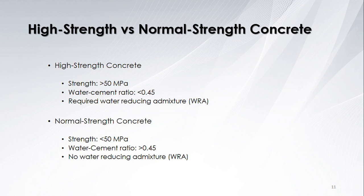For high-strength concrete, the compressive strength is 50 MPa or greater. The water-cement ratio is 45% or lower, and a water-reducing admixture is used to achieve this. The compressive strength of normal-strength concrete is lower than 50 MPa. The water-cement ratio is greater than 45%, and there is no water-reducing admixture present.